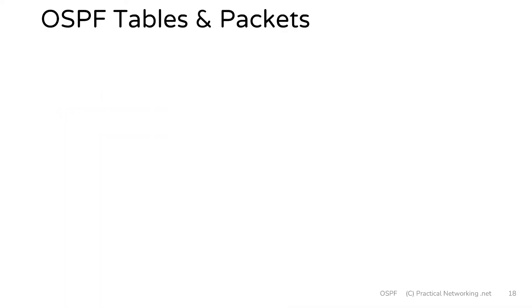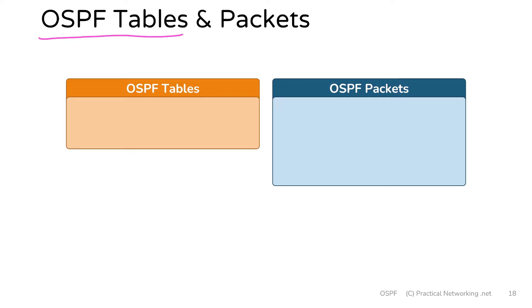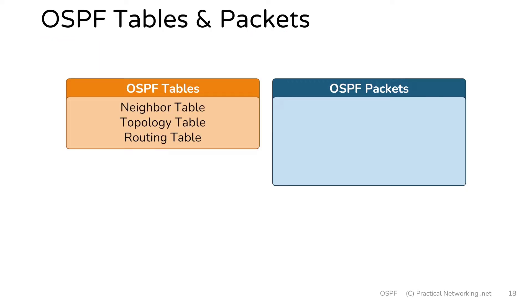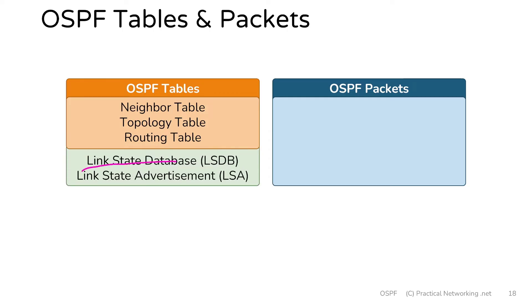To understand the framework that OSPF uses, we're going to discuss OSPF tables and OSPF packets. OSPF makes use of three different tables: the neighbor table, the topology table, and a routing table. While discussing the topology table, we'll get to introduce two other very important OSPF terms: the link state database, or the LSDB, and link state advertisements, or the LSAs.